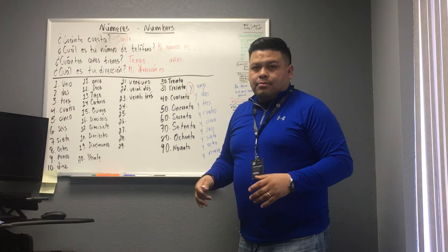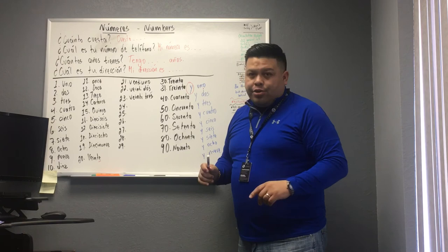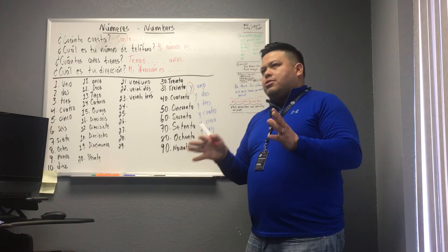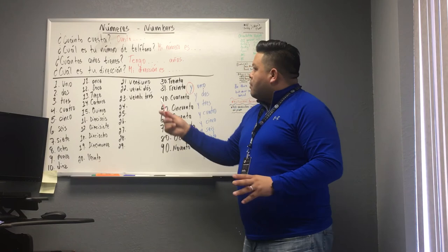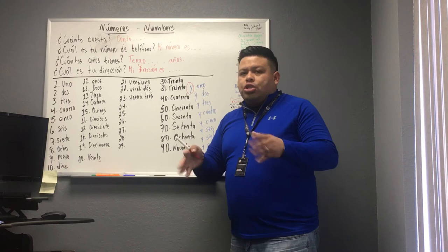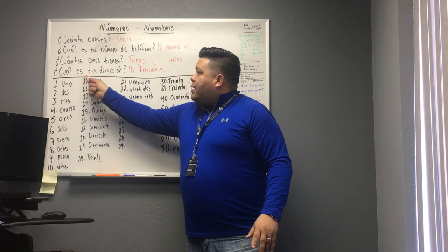¿Cuántos años tienes? Tengo veintiún años. In Spanish you have to be very careful in what you say. So you're going to say: tengo veintiuno. Tengo treinta y uno. Tengo cuarenta y uno. Tengo cincuenta y uno. Tengo trece años. And so on.